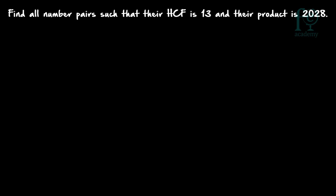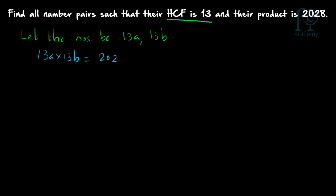Question 2: find all number pairs such that their HCF is 13 and their product is 2028. You have to find all number pairs so that their HCF is 13 and their product is 2028. Since HCF is 13, both numbers will be multiples of 13. Let the numbers be 13A and 13B. Then 13A × 13B = 2028, which gives 169AB = 2028.